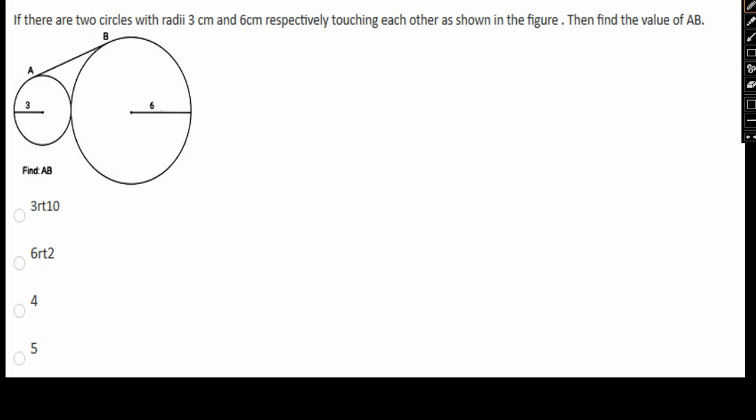If there are two circles with radii 3 cm and 6 cm touching each other as shown in the figure, then find the value of AB. We need to find the value of AB. Let me join these two points.